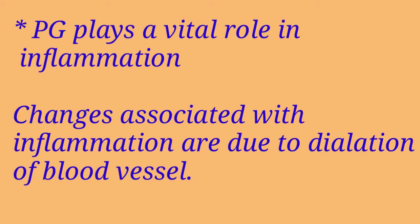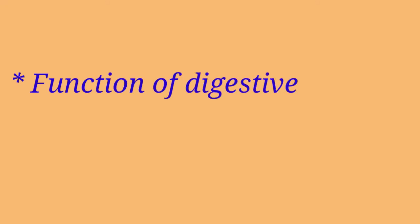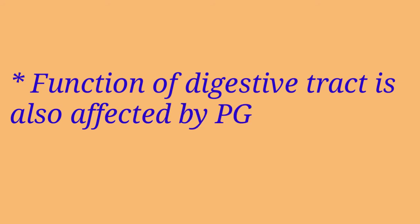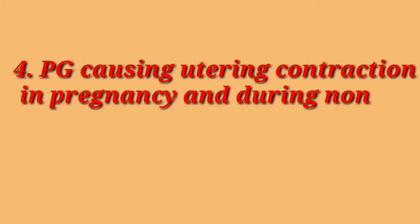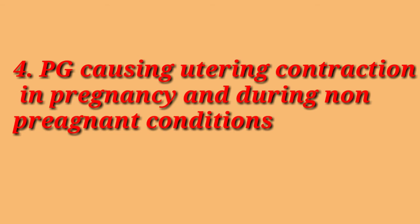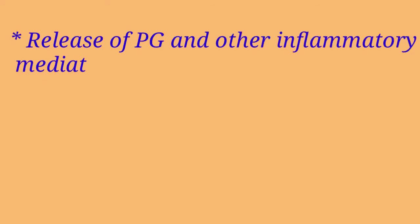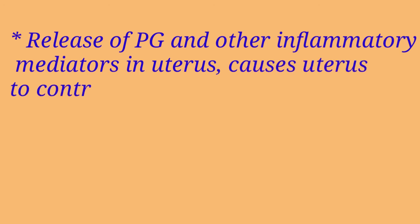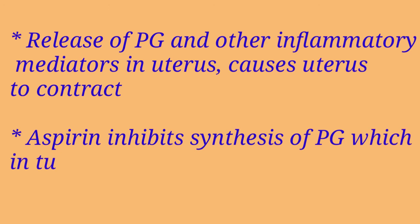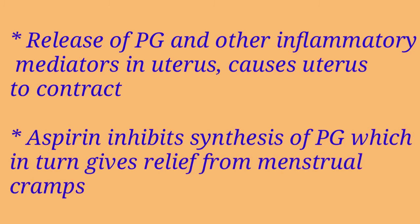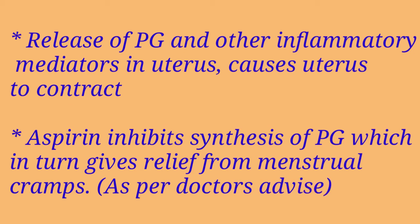The function of the digestive tract is also affected by prostaglandin, either by stimulating or inhibiting the contraction of smooth muscles of the intestinal wall. It also inhibits the secretion of gastric acid. Prostaglandin causes uterine contraction in both pregnant and non-pregnant conditions. Prostaglandins are released during menstruation, and the release of prostaglandins and other inflammatory mediators in the uterus causes the uterus to contract, which led to the successful treatment of menstrual cramps.